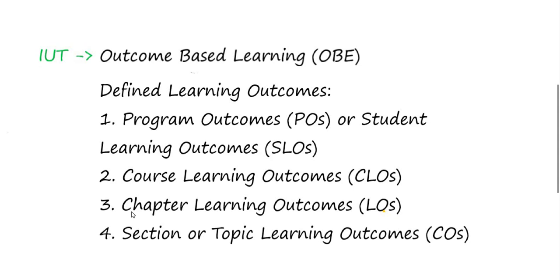Our new vice chancellor has given a lot of importance to OBE in order to get accredited by ABET. According to OBE, there are defined learning outcomes classified into four categories. The first is Program Outcomes or POs, also called Student Learning Outcomes or SLOs. This defines what the student will be able to do and learn after the entire four-year program is completed.